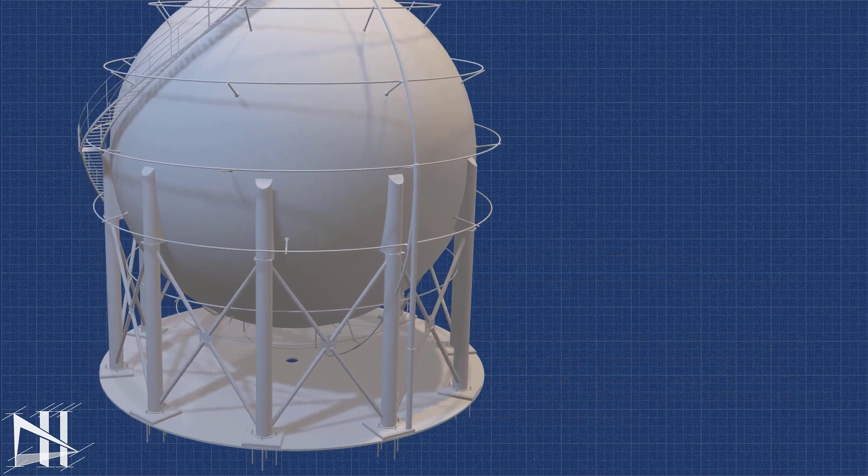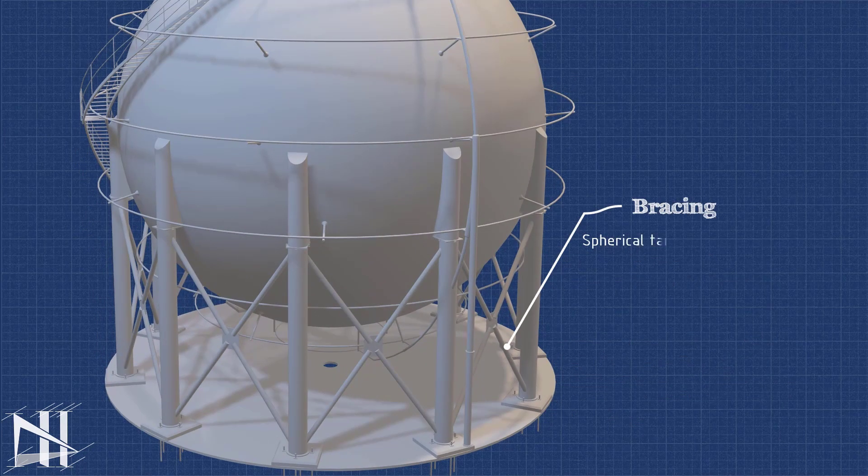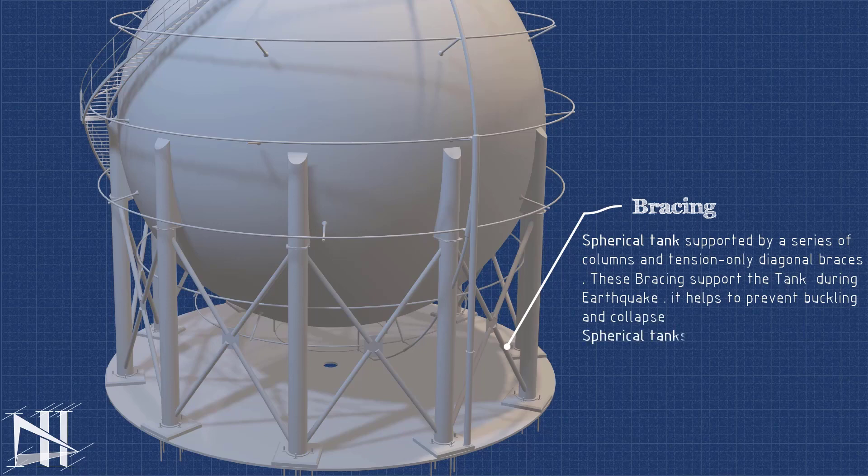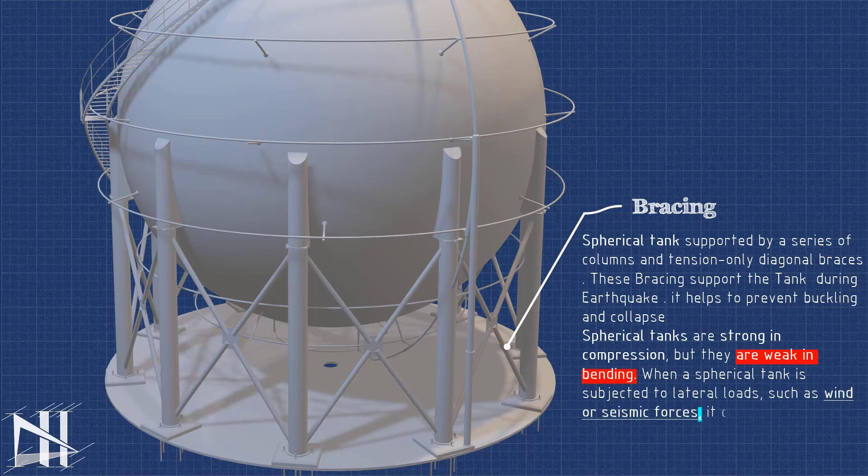Now, we're going to talk about bracing, which is another important part of a spherical tank structure. Bracing is a system of diagonal beams that help to stiffen the tank and prevent it from buckling. Buckling is when the tank collapses under lateral loads, such as wind or seismic forces. Bracing helps to distribute these loads evenly across the tank, making it more resistant to buckling.